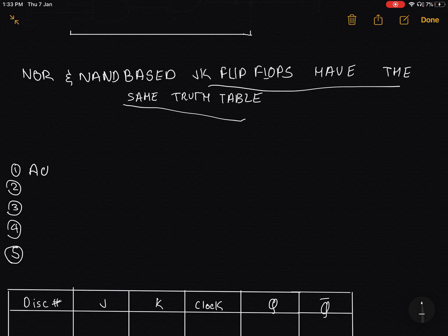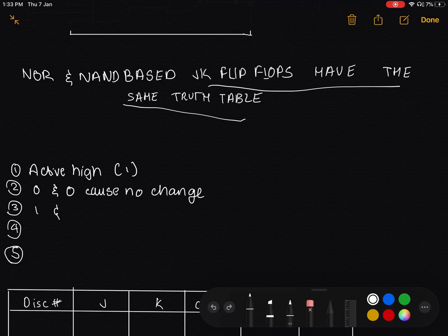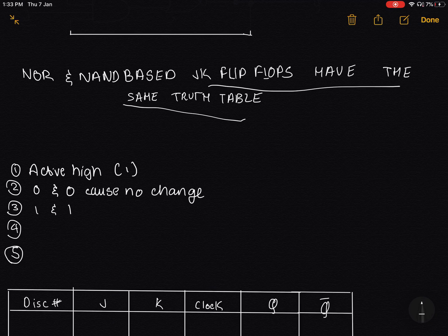Some points about JK flip flops: they are active high, which means they respond to inputs of 1. 0 and 0 cause no change in the value. Input of 1 and 1, however, this is not something we saw in SR flip flops. 1 and 1 will cause the bits to flip.